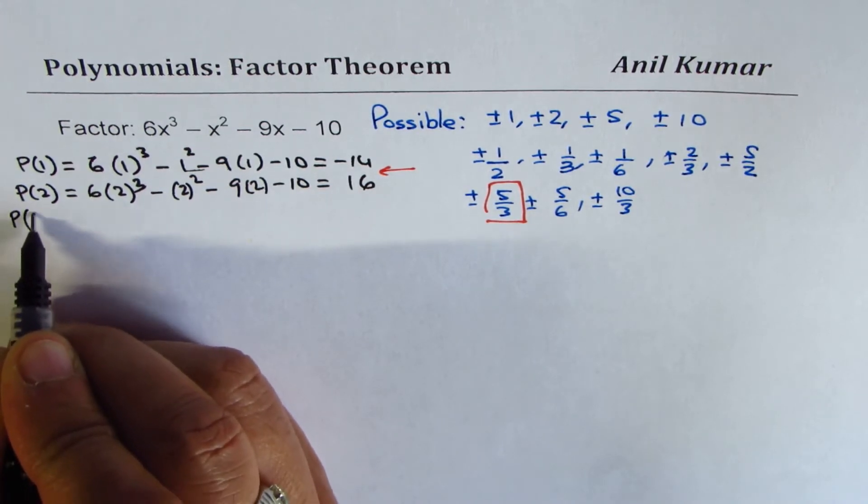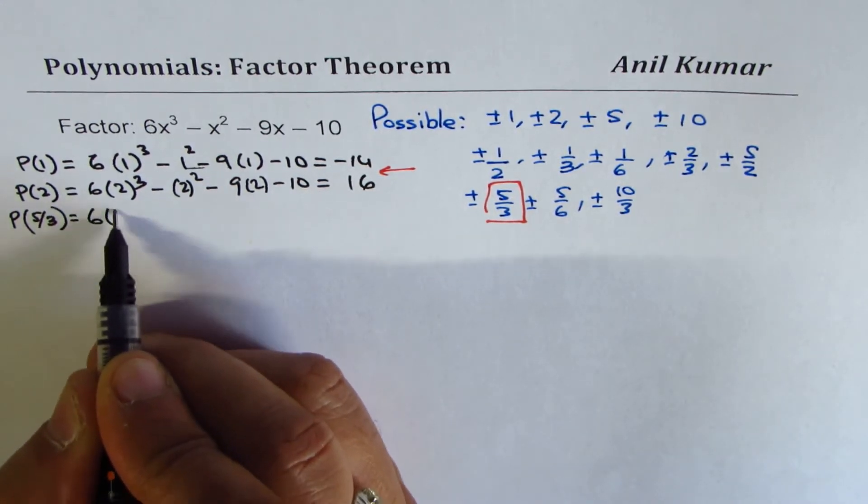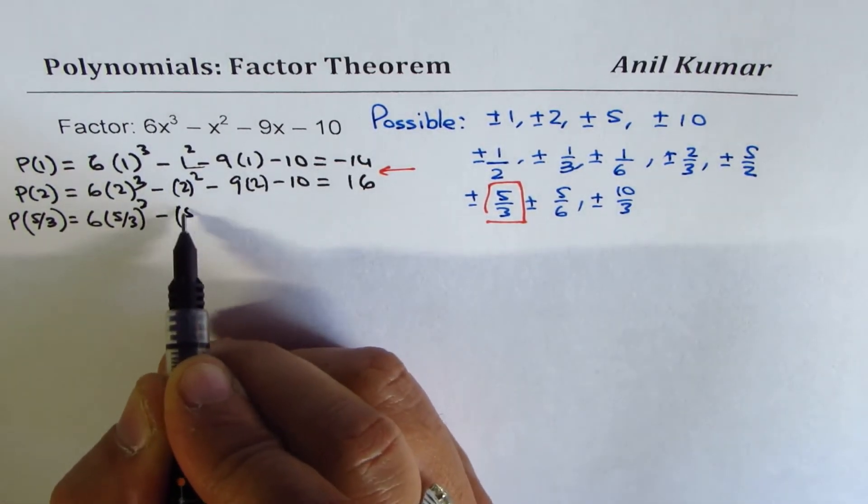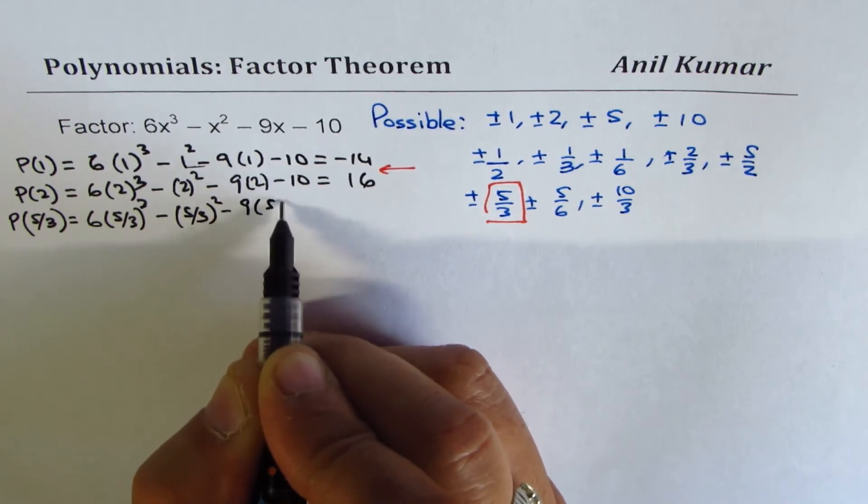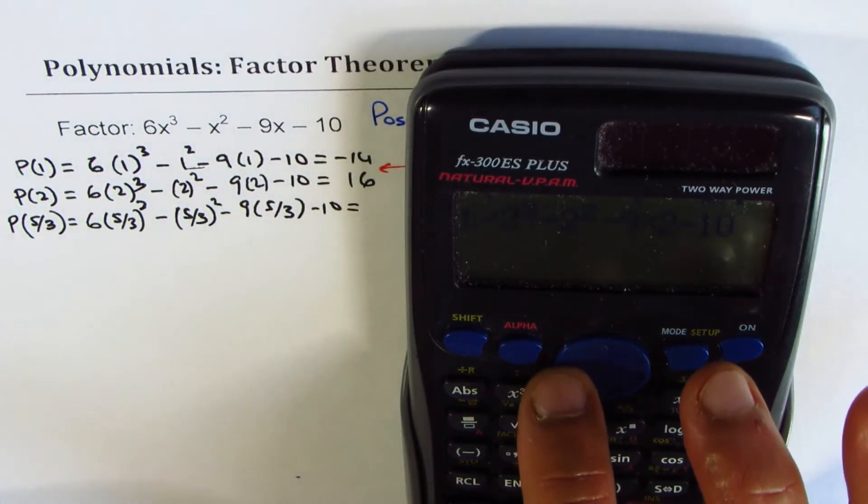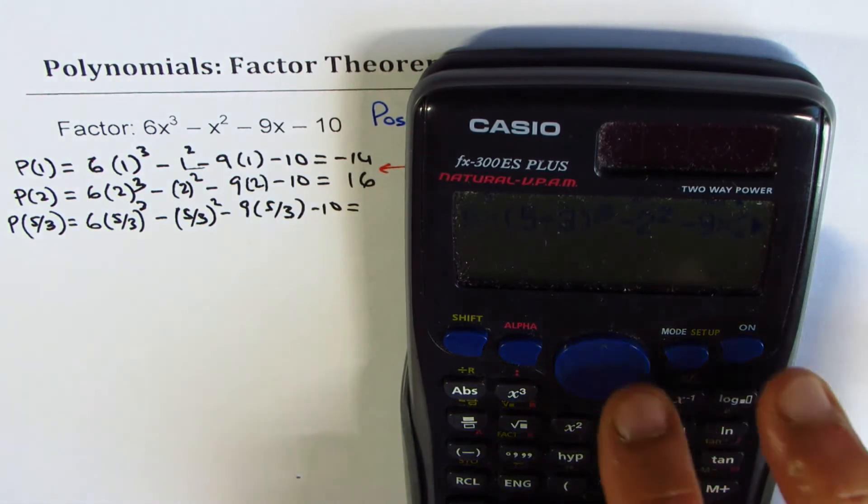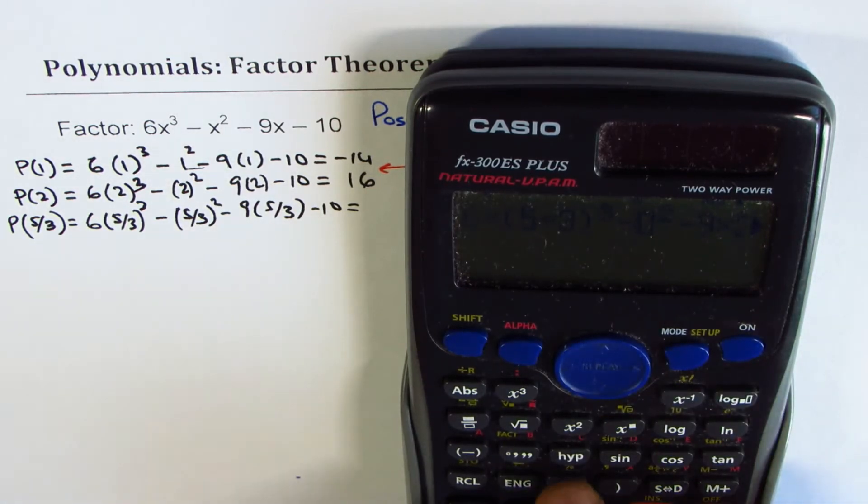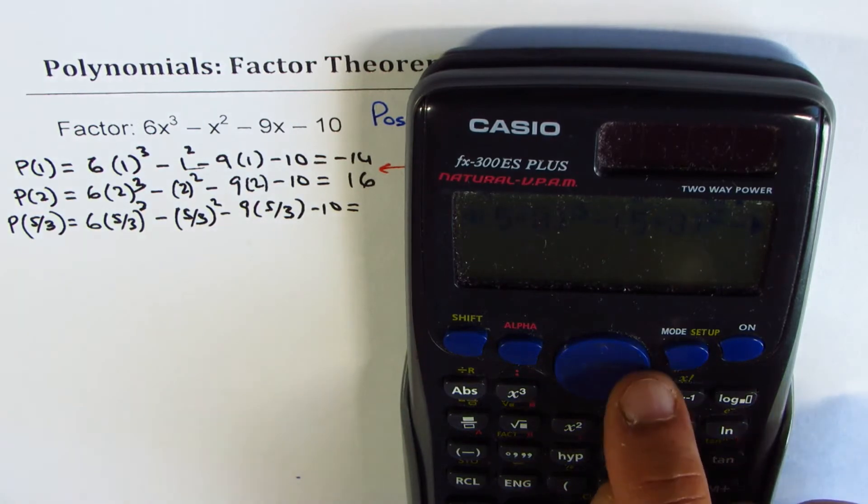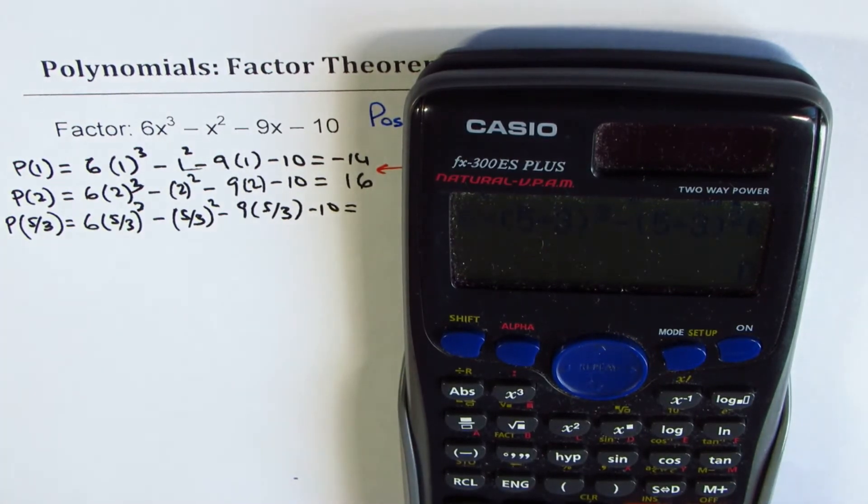We'll now try the value of the polynomial for 5/3. It is less than 2. That is 6(5/3)³ - (5/3)² - 9(5/3) - 10 equals how much? So let's get back to the equation. We'll take away 9 times 5/3, and let's check the answer. We get 0.